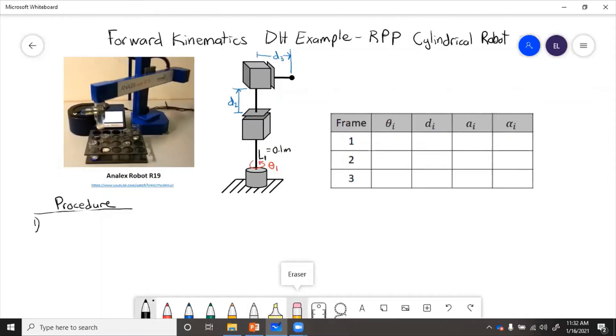The first thing we're going to do is identify the joint axes. So that means zi for each joint. And then next, we put on the coordinate frames with x going perpendicular. Then we find the DH parameters and put those in the table. So we'll need theta, d, a, alpha for each frame.